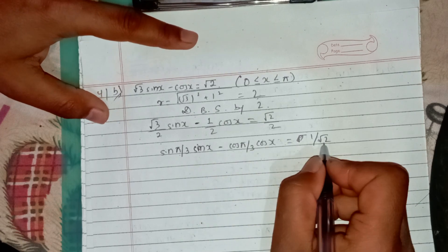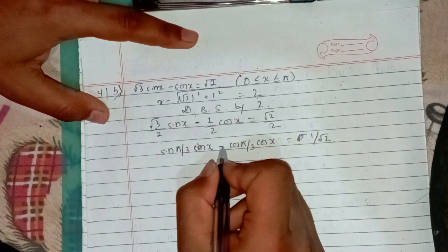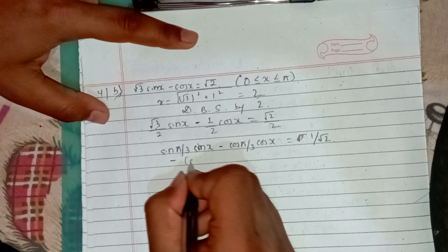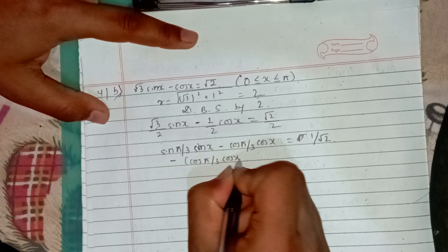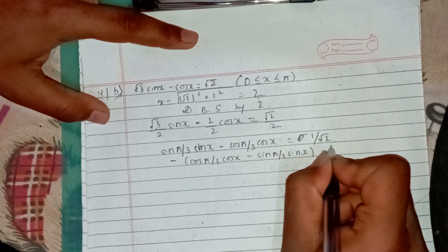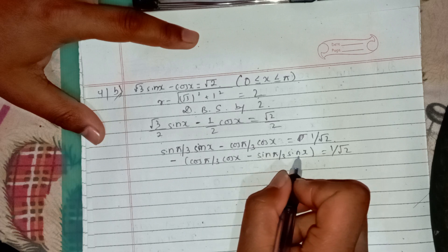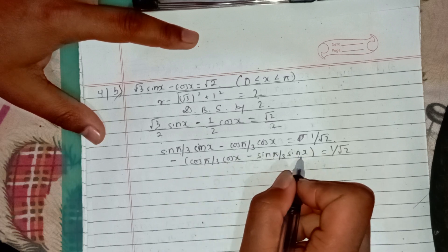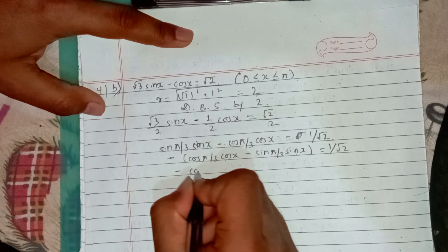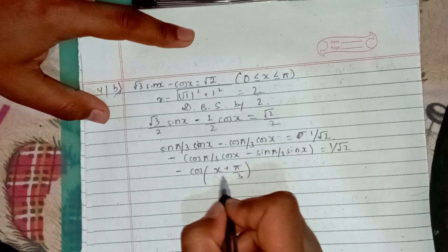We have the cos formula here. Cos a cos b, sin b: sin pi by 3 sin x, sin pi by 3, sin x, cos pi by 3 is 1 by 2. Cos x equals root 2 by 2, which is 1 by root 2. We put this in the form of cos a cos b plus sin a sin b, or cos a minus b.